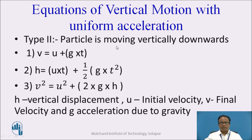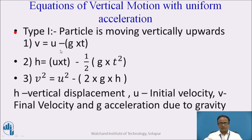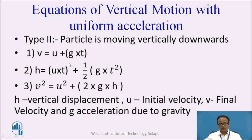Now let us consider Type 2: when a particle is moving vertically downwards. The expression for final velocity is v = u + gt. The plus sign is used because, in the downward journey, the acceleration due to gravity g acts in the downward direction. The second expression is h = ut + ½gt², and the third expression is v² = u² + 2gh, where h is the vertical displacement, u is the initial velocity, v is the final velocity, and g is the acceleration due to gravity. The difference between Type 1 and Type 2 is that g is taken as minus in Type 1 and positive in Type 2, because gravity acts towards the centre of the earth.